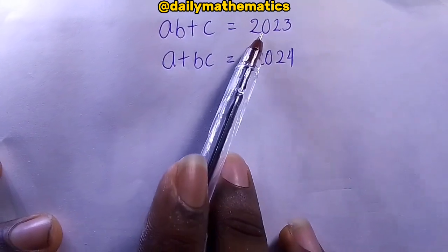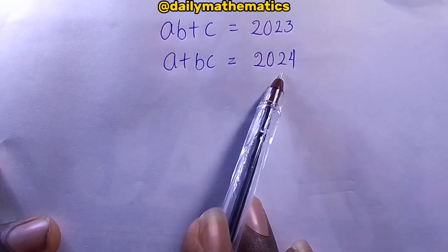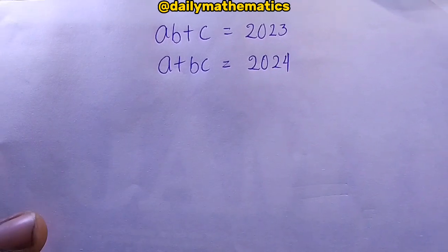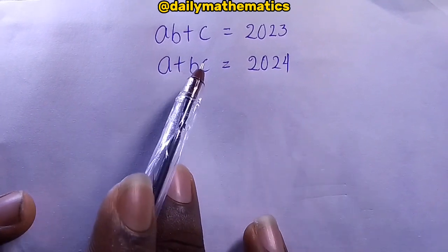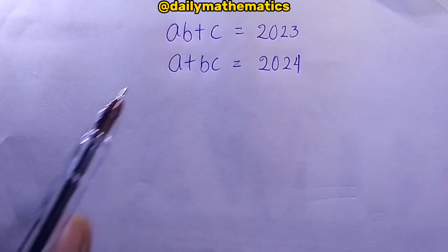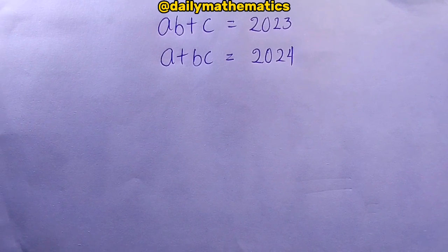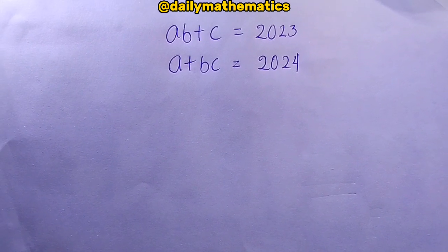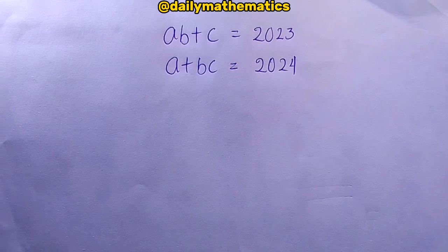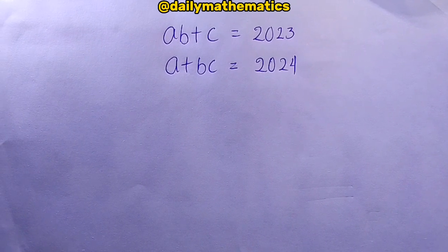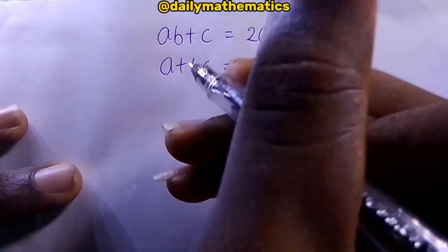We have two equations: ab plus c equals 2023, and a plus bc equals 2024. Hi, this is Daily Mathematics, and today we want to work out this question finding a, b, and c. Back to the question: ab plus c equals 2023, and a plus bc equals 2024. We have to find a, b, and c.